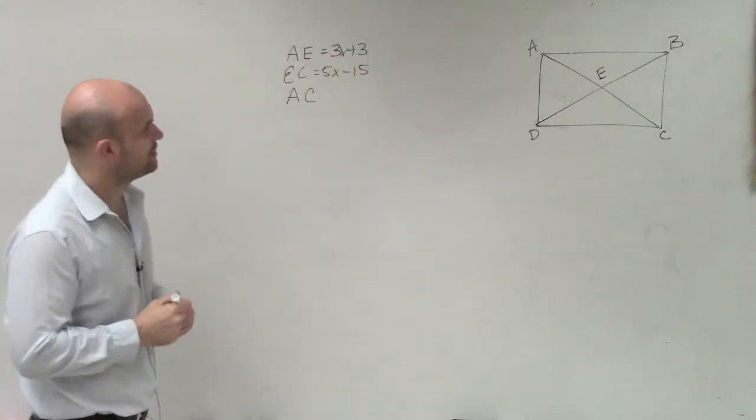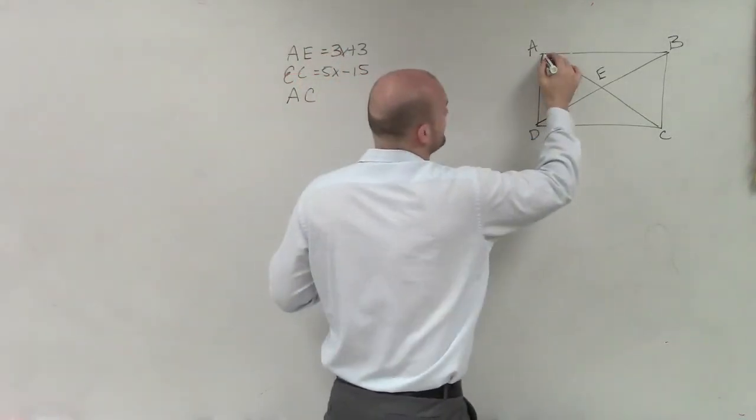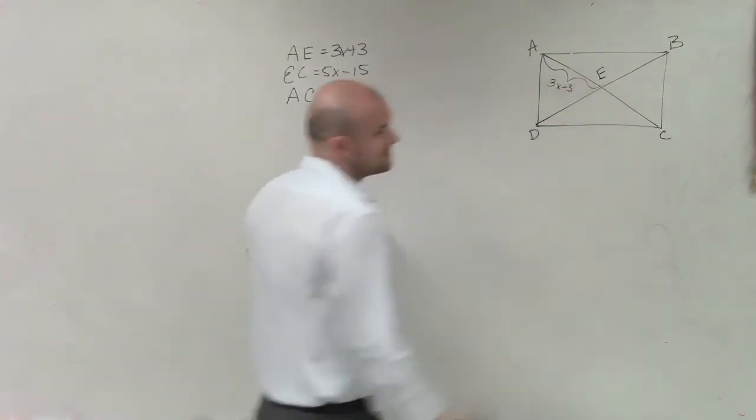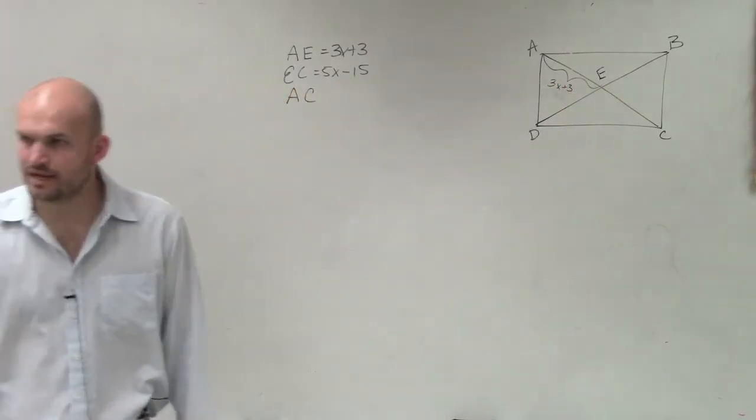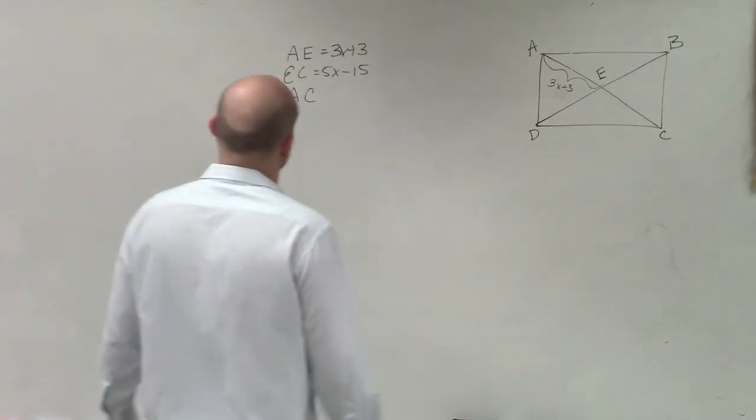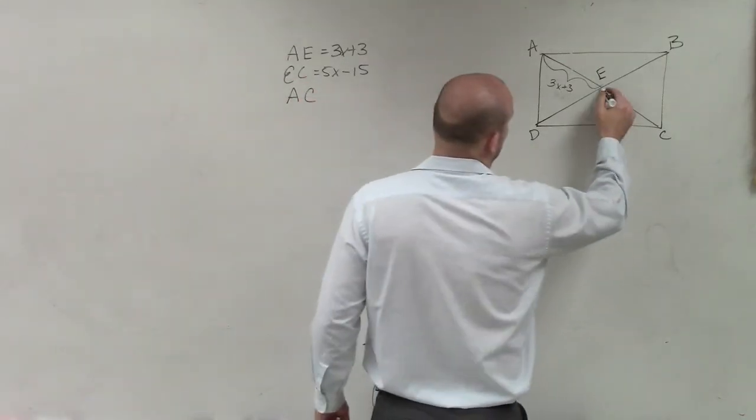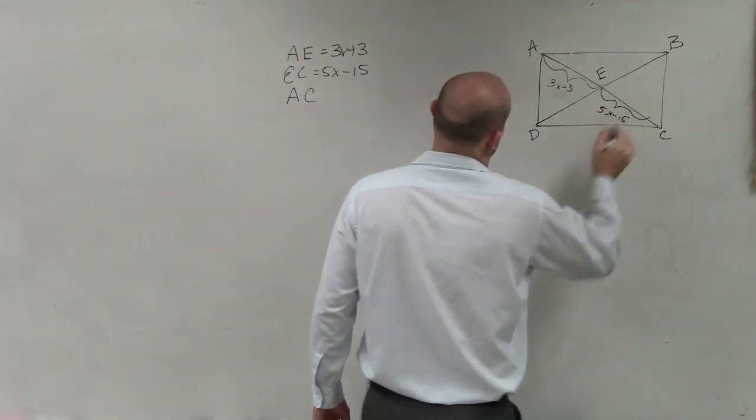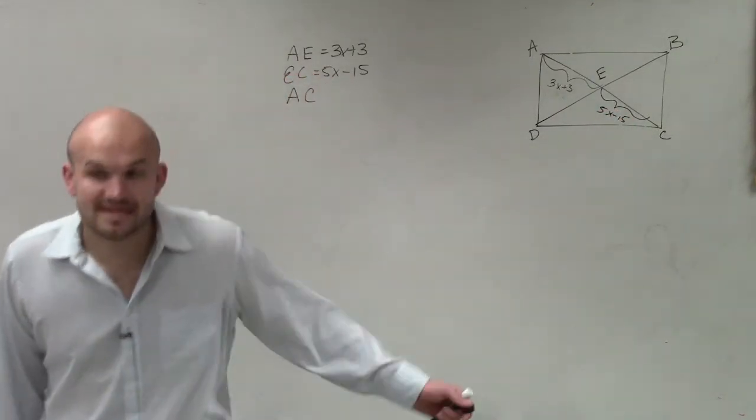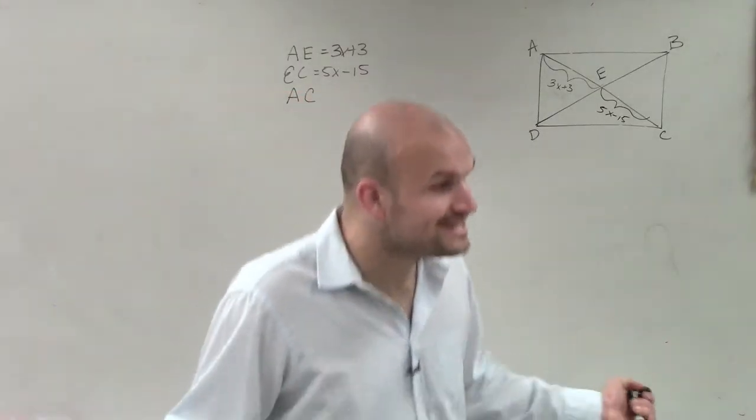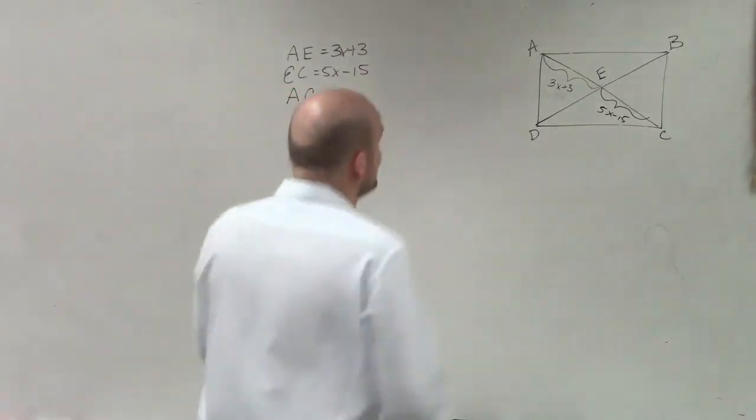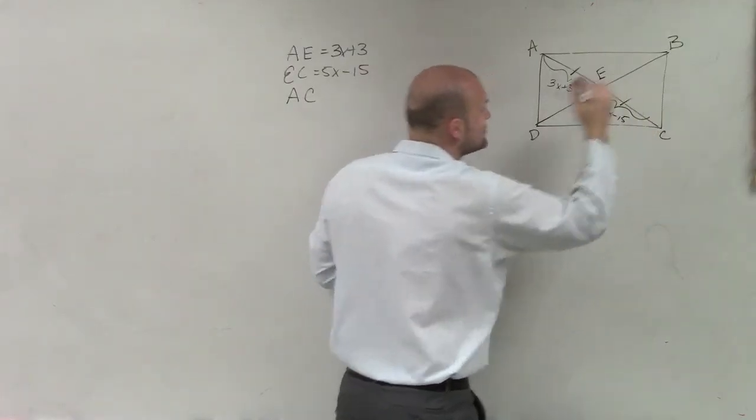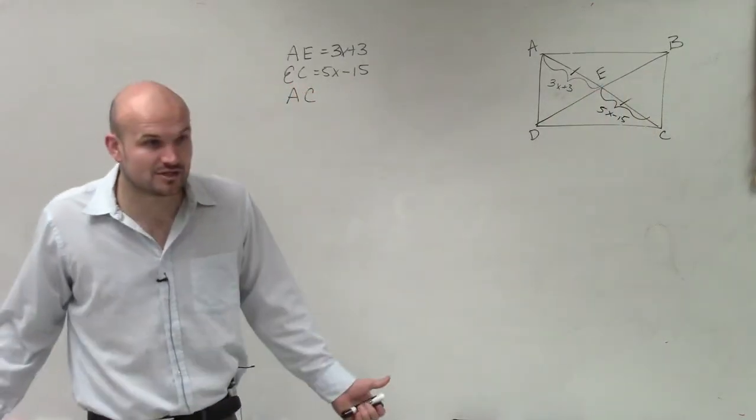In this case, it says AE equals 3x plus 3. So what I'm going to do is I'm going to label that side. EC, we label right here, 5x minus 15. Now, since this is a parallelogram, we know they bisect each other. We know that this diagonal bisects this one. So can I say that those two are now equal to each other?